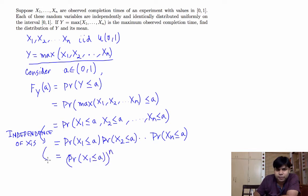So basically this step follows from the fact that they are identically distributed. Now since x1 is uniform 0 to 1, probability that x1 is less than equal to a is nothing but a.